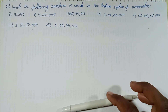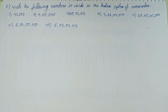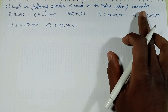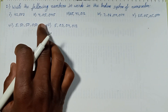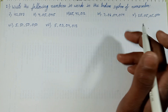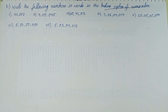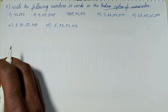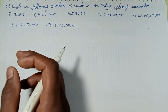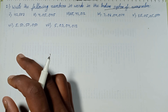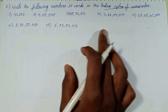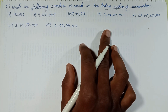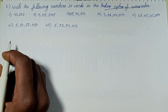Bande Mataram everyone, welcome back to a new episode. This episode discusses Exercise 1.1, Question Number 2: write the following numbers in word form in the Indian system of numeration. Let's go and solve one by one. Question Number 1 link is given in the description.